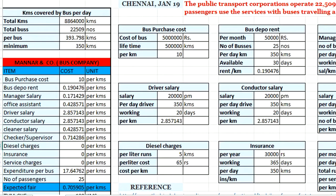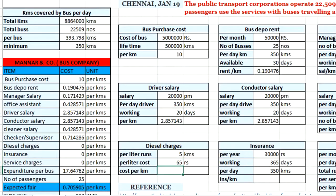Now let us see the charges for diesel. The cost of one liter of diesel is ₹65, which can operate the bus for approximately 5 to 6 kilometers. Taking the lower bound of 5 kilometers, the diesel cost per kilometer = ₹65 ÷ 5 = ₹13 per kilometer.